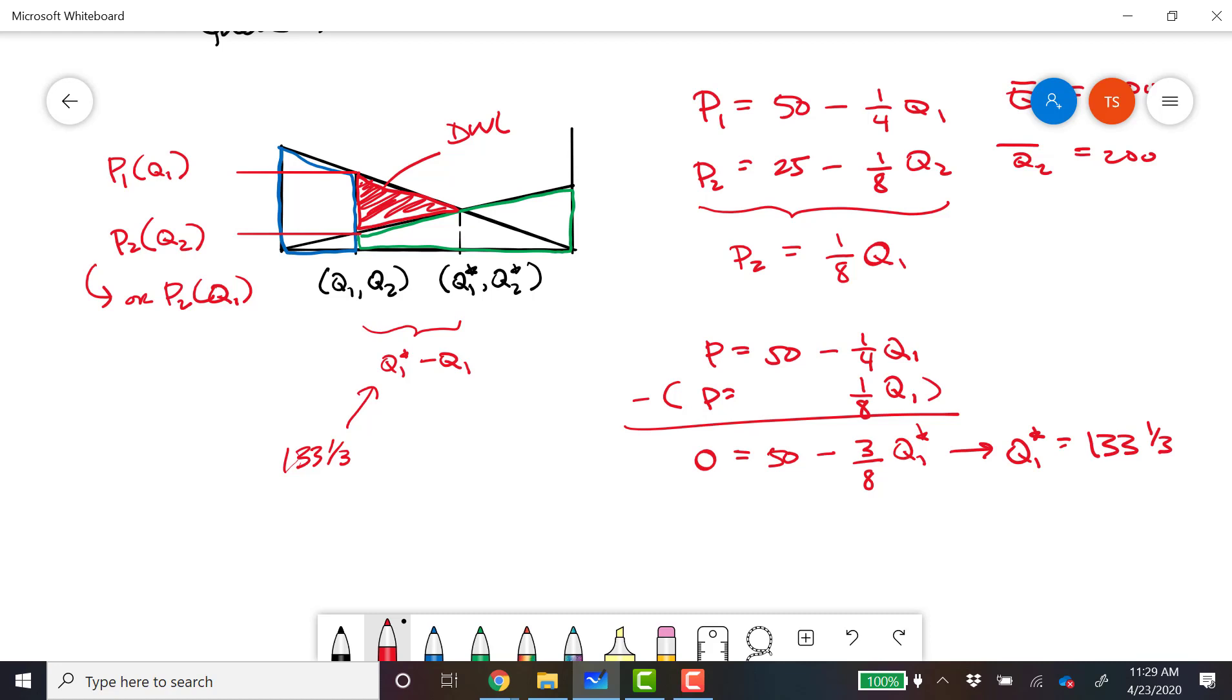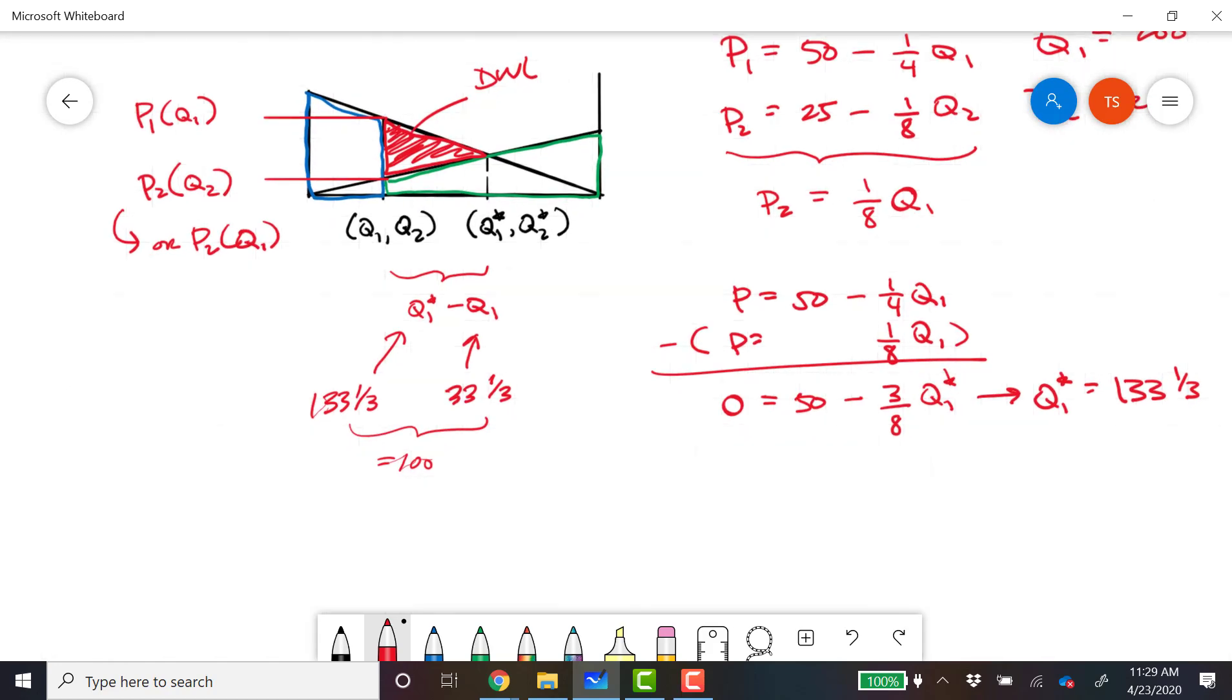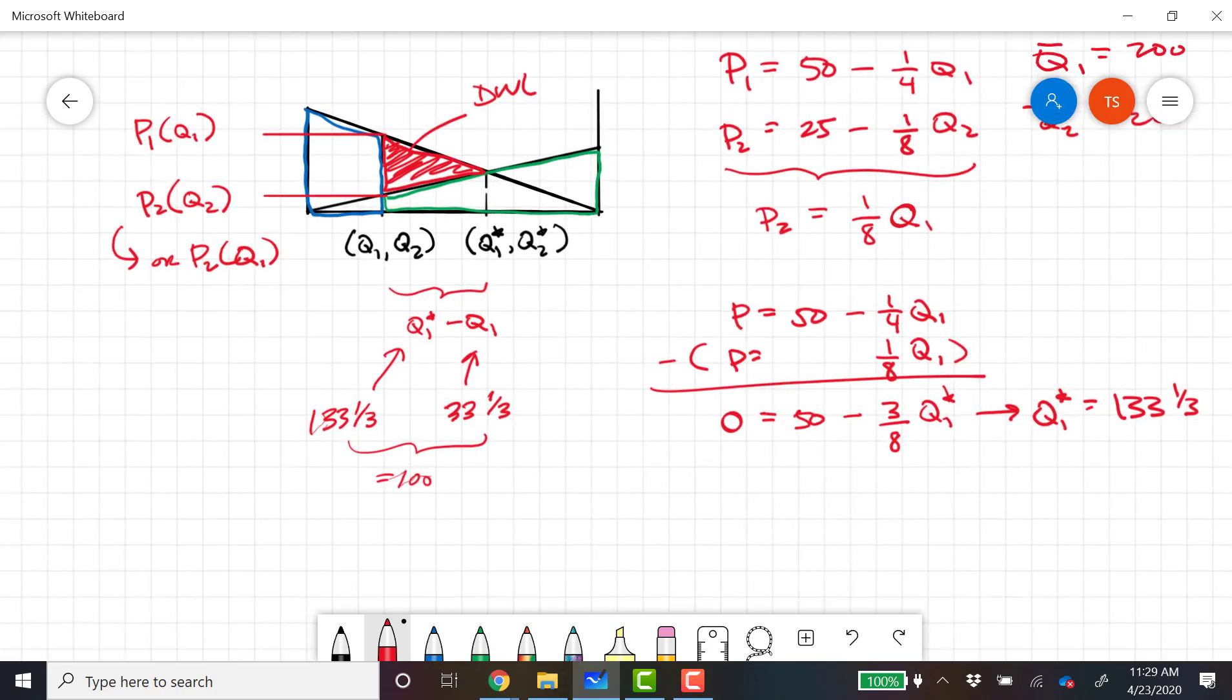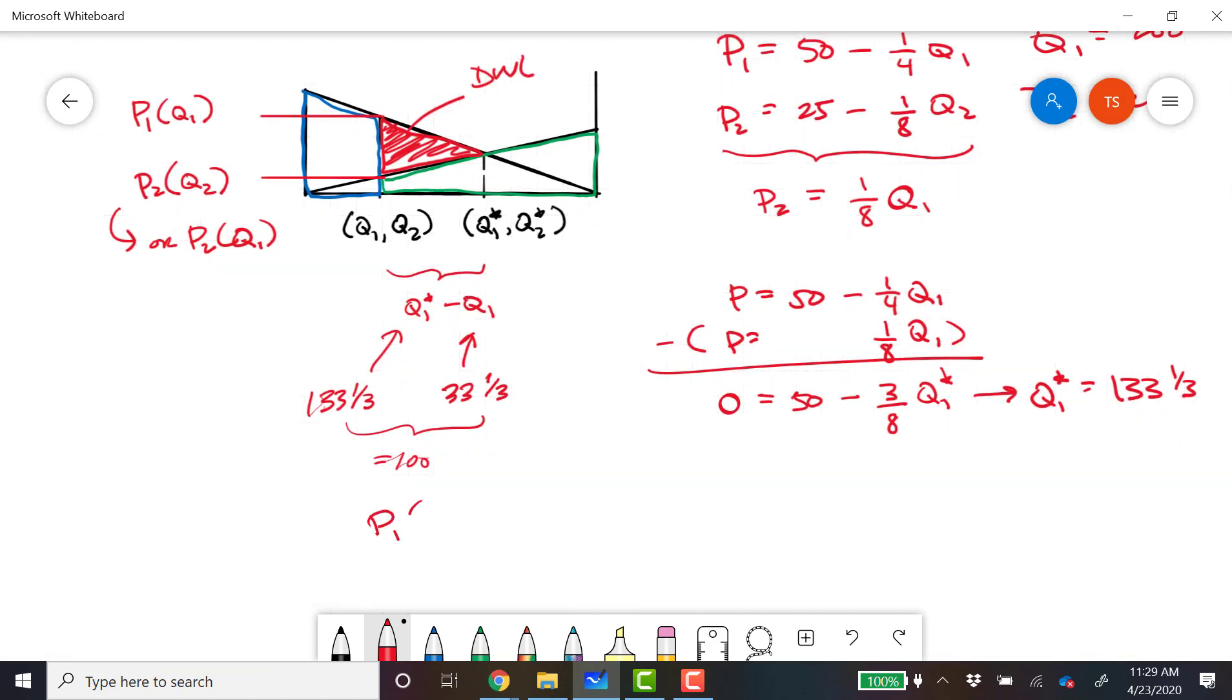And let's say that instead our initial allocation was actually 33 and a third instead of 133 and a third. So this difference is equal to 100 units. Now what about these values? We have to evaluate them at the original Q1. So P1 of Q1 is equal to 50 minus 1 fourth Q1 equals 50 minus 1 fourth times 33 and a third, which should be 8 and a third. So we should have 41 and 2 thirds.